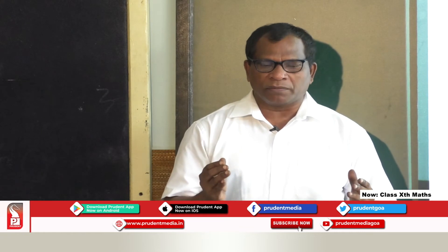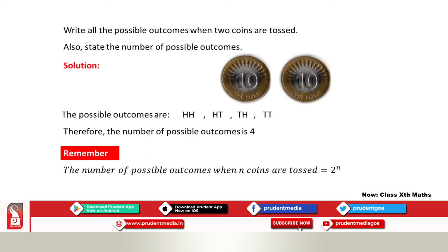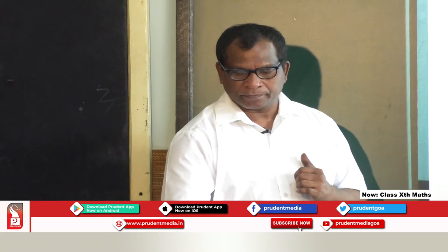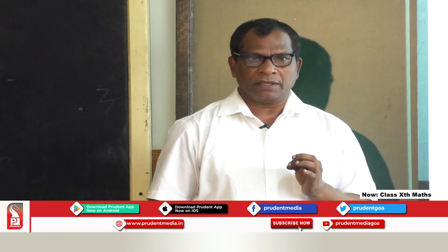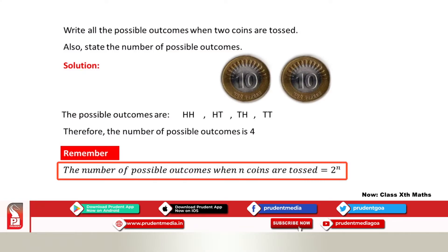Write all the possible outcomes when two coins are tossed and state the number of possible outcomes. I have two coins here. The possible outcomes are: head-head, head-tail, tail-head, and tail-tail — so there are four possible outcomes. Remember the coin has two faces. The general rule is: the number of possible outcomes when n coins are tossed is 2 raised to n.